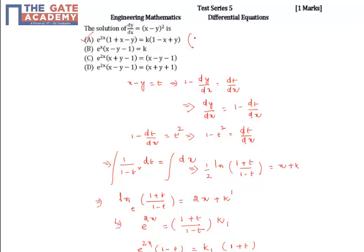Change signs of x, y on both sides. If you change the signs, this will become e power 2x times 1 minus x plus y equal to k times 1 plus x minus y, which is the required solution of the given differential equation.